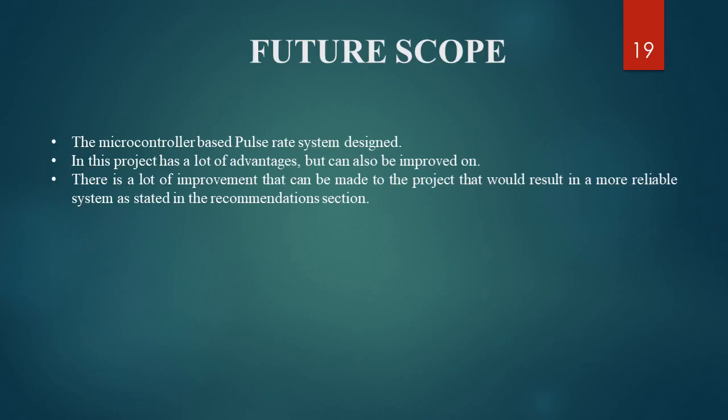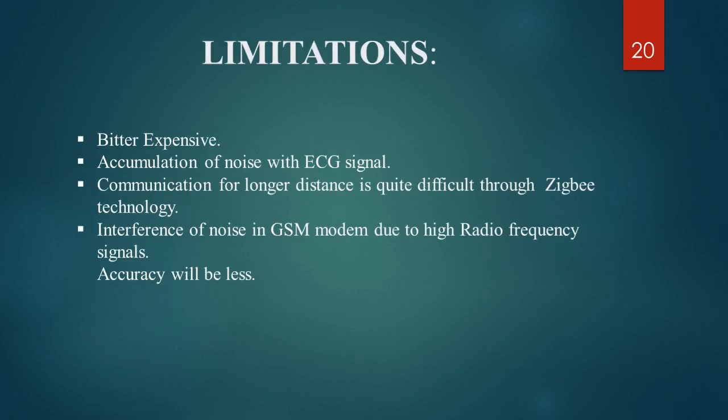The next point is future scope. The microcontroller-based pulse rate system designed in this project has many advantages but can also be improved. There is a lot of improvement that could result in a more reliable system, as noted in the recommendation section. Limitations of the project include the battery being expensive, accumulation of noise in ECG signal communication, and difficulty in communication over longer distances through Zigbee technology.